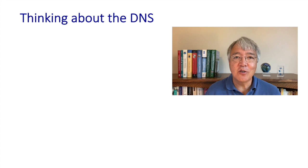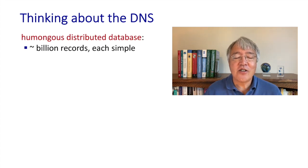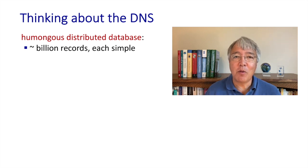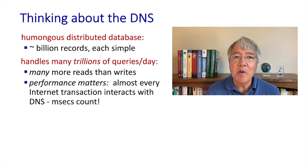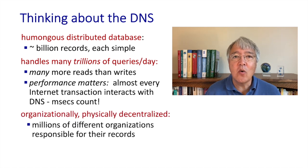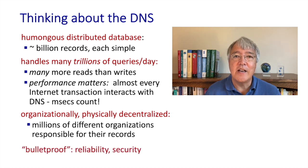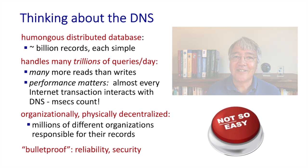Before diving into technical details, let's summarize how to think about the DNS. Think of it as a highly distributed, high-scale, high-performance distributed database — a tough problem, though the records are relatively simple. It needs to handle literally trillions of requests, mostly reads, every day, with really high performance where milliseconds count. Organizationally, it's also highly decentralized, with hundreds of thousands of organizations responsible for their pieces of this distributed database.